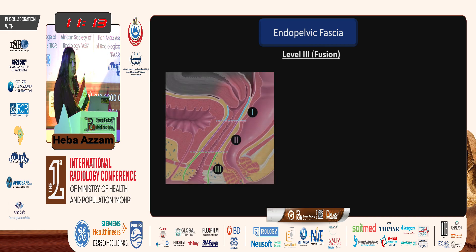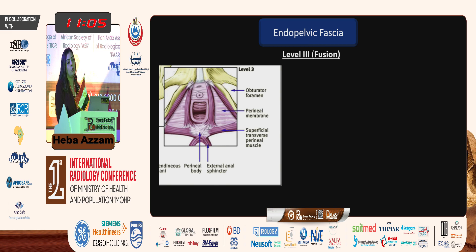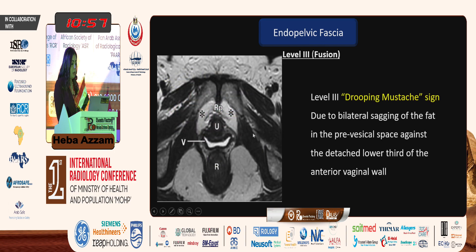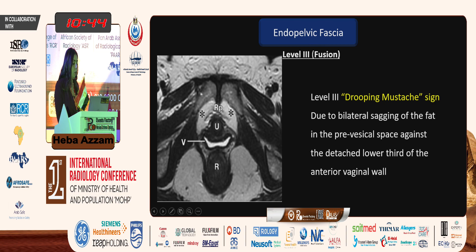Level three is the level of fusion, referring to the lowermost part of the vagina, where the vagina is fused anteriorly to the urethra, posteriorly to the perineal body, and laterally to the levator ani muscle. Failure at this level causes bilateral sagging of the fat in the prevaginal space against the detached lower third of the vagina — called the drooping mustache sign, as the fat sagging resembles a mustache. So we cannot see the fascia directly, yet we can see the defect at each level.